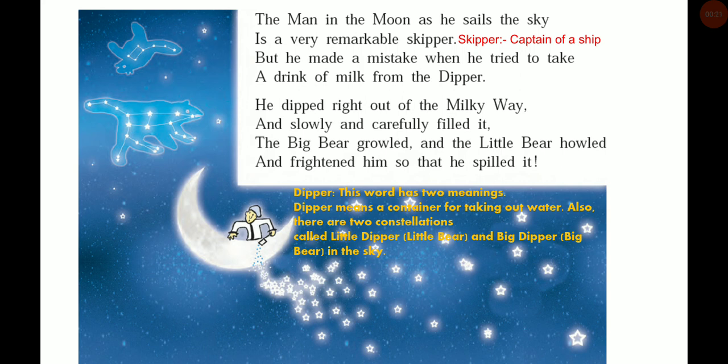The man in the moon as he sails the sky is a very remarkable skipper. But he made a mistake when he tried to take a drink of milk from the dipper. He dipped right out of the milky way and slowly and carefully filled it. The big bear growled and the little bear howled and frightened him so that he spilled it.